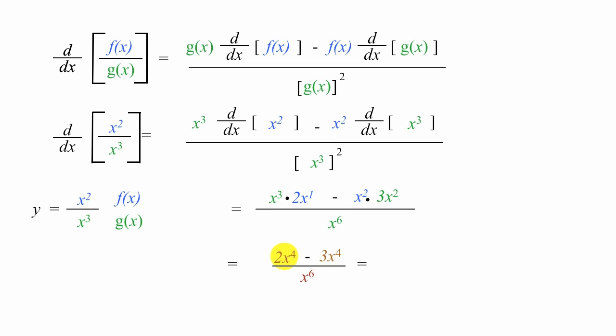2 times x to the fourth power minus 3 times x to the fourth power is negative 1 times x to the fourth power divided by x to the sixth power. This all equals negative 1 divided by x squared. When dividing, we take the exponents and subtract them, so it's 6 minus 4, which is 2.